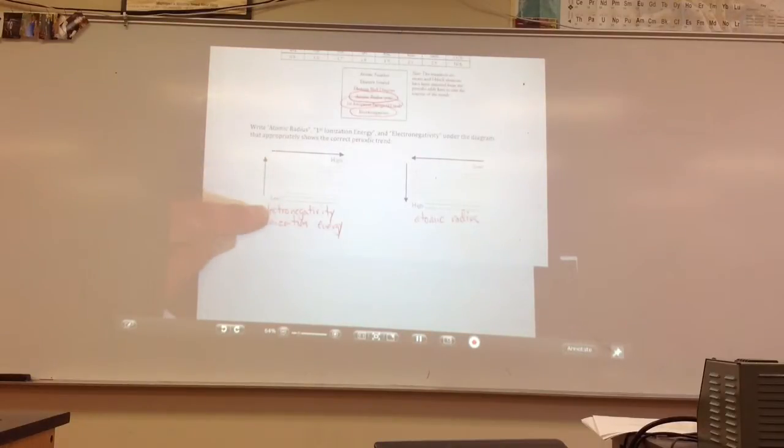And the reason for that is within a period, as you go from left to right, the coulombic attraction with the number of protons increases. So therefore, the energy required to remove an electron will also go up, and the ability to gain an electron from a nearby atom would go up because of that coulombic attraction.